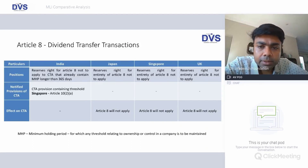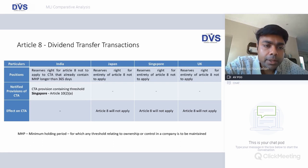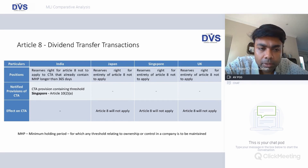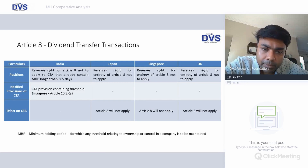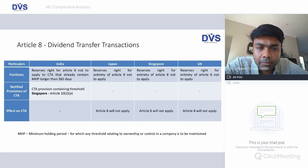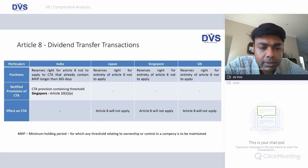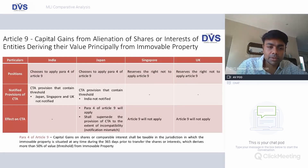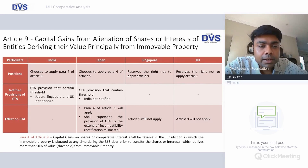Article 8 on dividend transfer transactions: India reserves the right for Article 8 not to apply to CTAs that already contain a minimum holding period longer than 365 days. Japan reserves the right for the entirety of Article 8 not to apply, and all three countries have decided similarly. Therefore, Article 8 will not apply, so there is no point in discussing that further.